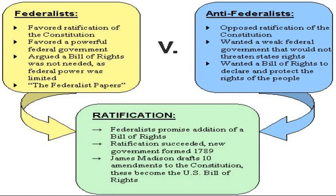Moving on to Section 1, which is all about creating the Bill of Rights. By 1791, the required number of states — nine — had approved the other 10 amendments, the first 10 amendments to the Constitution. Together, these 10 amendments form the Bill of Rights. So we're going to talk about each of the amendments.